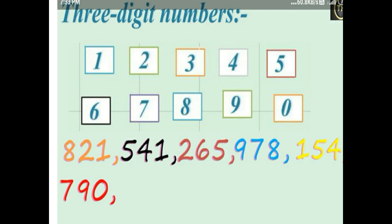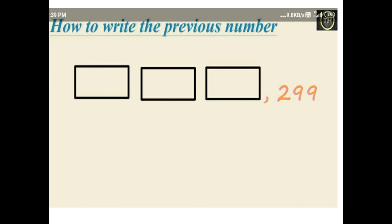One hundred and fifty four, seven hundred and ninety. Now, how to write the previous number — the number before a given number. Look at the picture: three empty boxes and the last number is two hundred and ninety nine. The previous number before two hundred and ninety nine, subtract by one, equals two hundred and ninety eight. Two hundred and ninety eight minus one equals two hundred and ninety seven. The correct answers are two hundred and eighty seven, two hundred and eighty eight, two hundred and ninety eight, and two hundred and ninety nine.